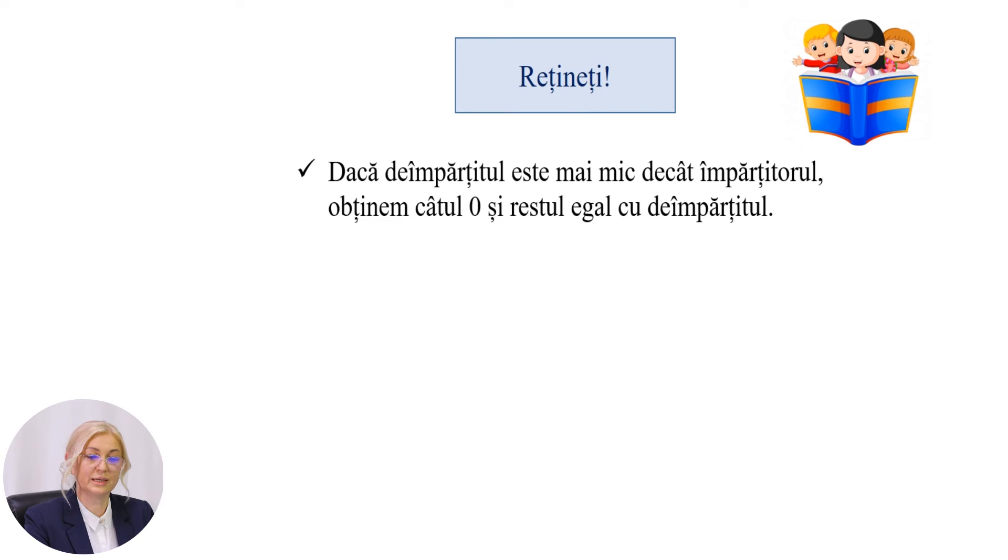Rețineți, dacă de împărțitul este mai mic decât împărțitorul, obținem câtul 0 și restul egal cu de împărțitul. Să observăm: 7 împărțit la 8 este egal cu 0 rest 7. Deci, ați observat, 7 este de împărțitul, 8 împărțitorul, 0 câtul și restul 7. Dacă de împărțitul este mai mic decât împărțitorul, atunci câtul este egal cu 0, iar restul este egal cu de împărțitul.